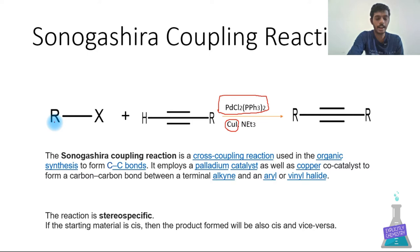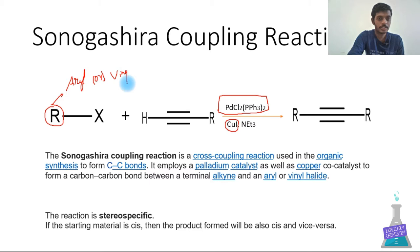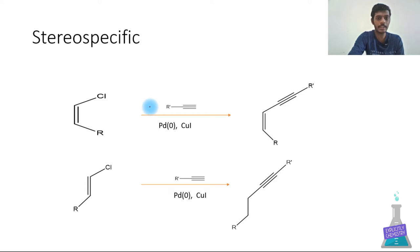The Sonogashira coupling forms a carbon-carbon bond between a terminal alkyne and an aryl or vinyl halide. The R group may be aryl, vinyl, or sometimes pyridinyl. An important point is that this reaction is stereospecific: if the starting material is cis, the product formed will also be cis, and vice versa — if the starting material is trans, the product will be trans.